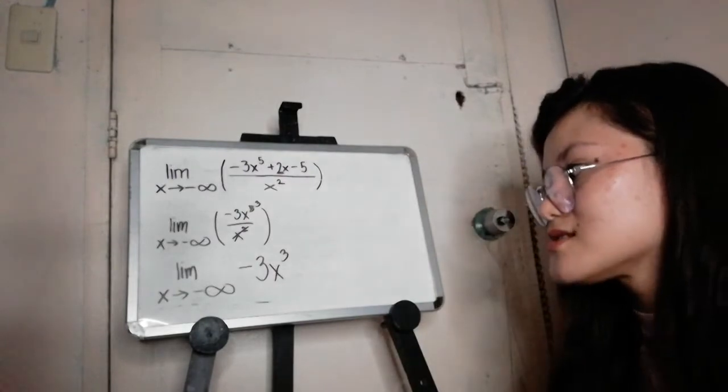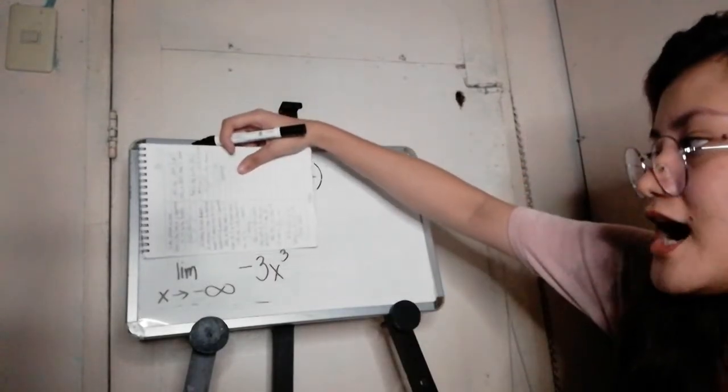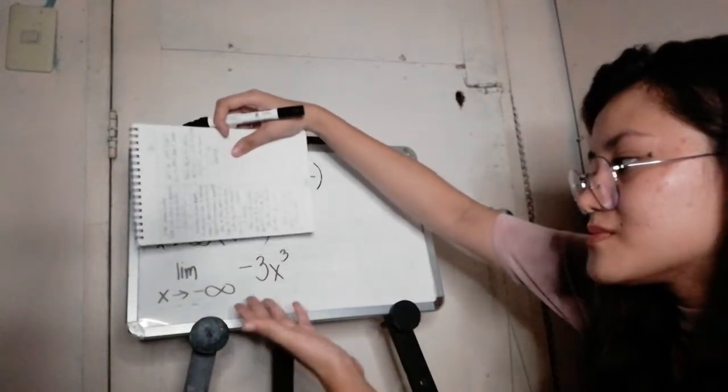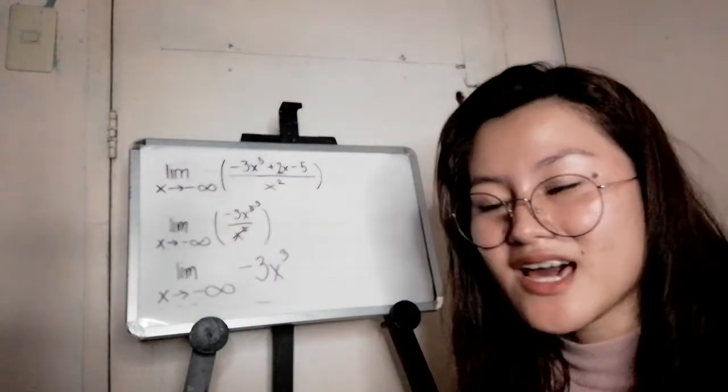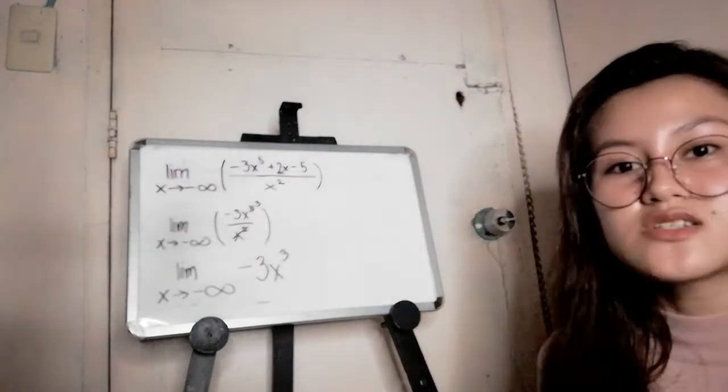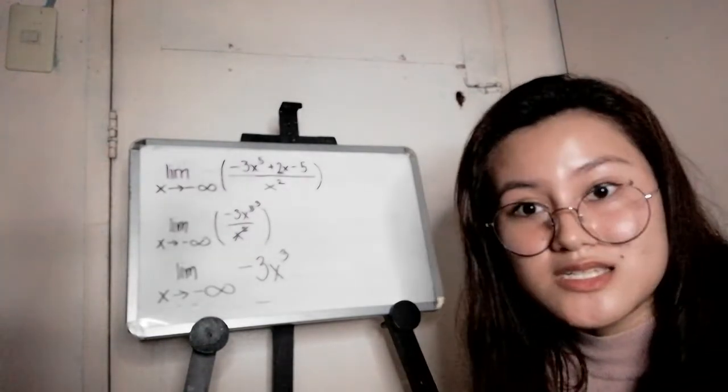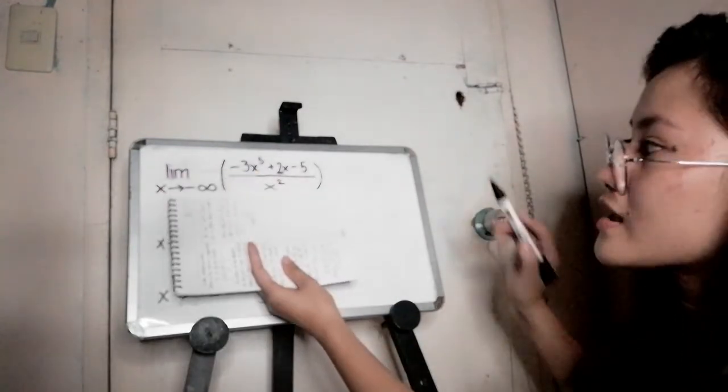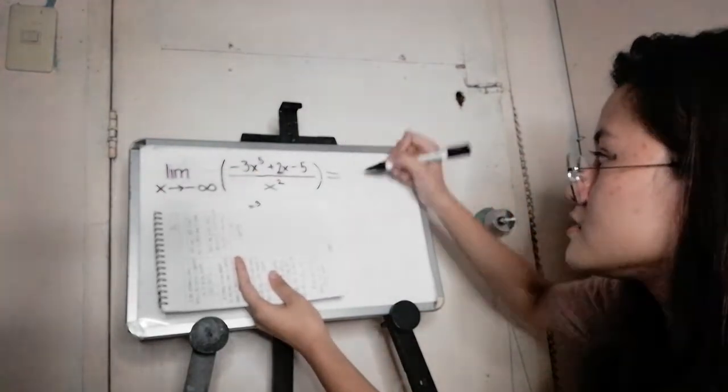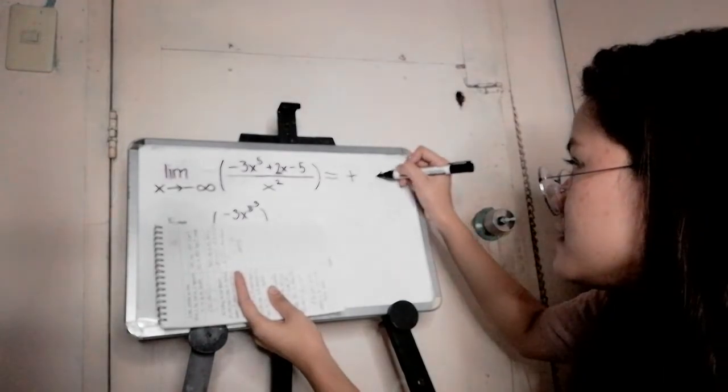At this point, we can now substitute x to negative infinity. I mean, any negative number. And it will result in a positive number, which means that this problem is equal to positive infinity.